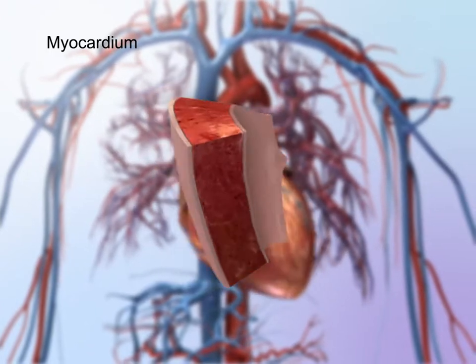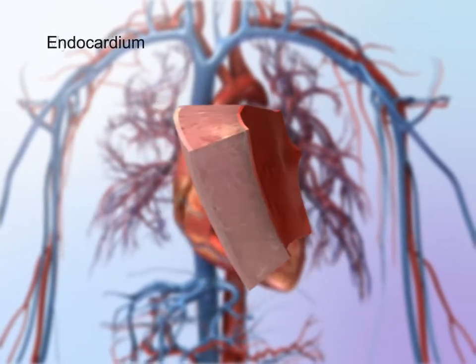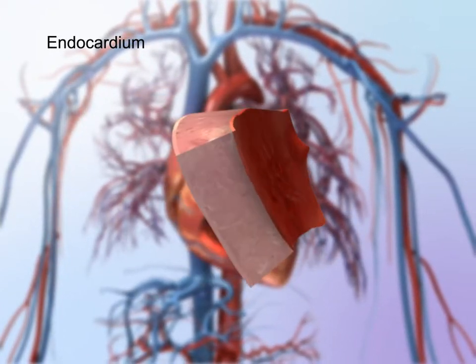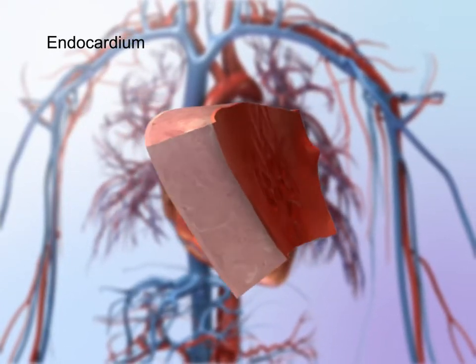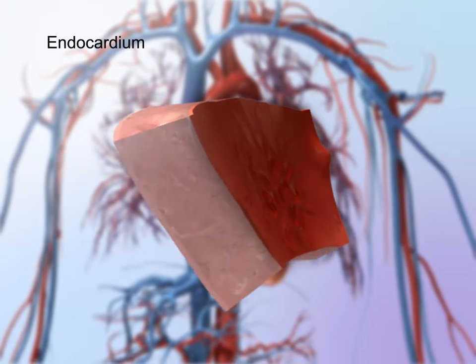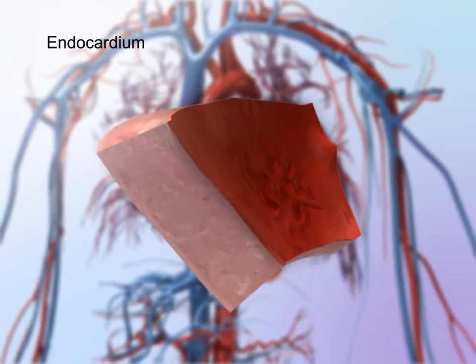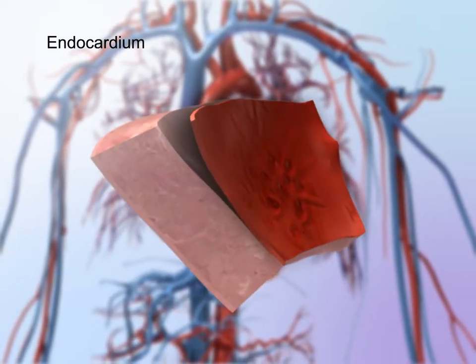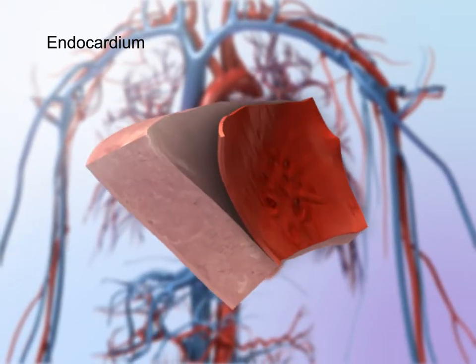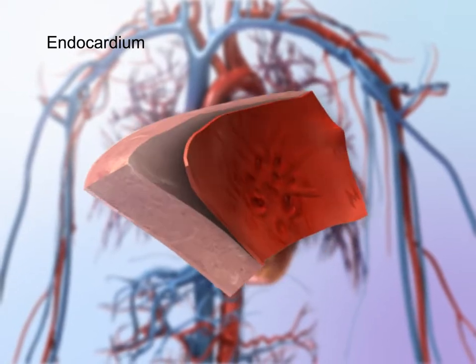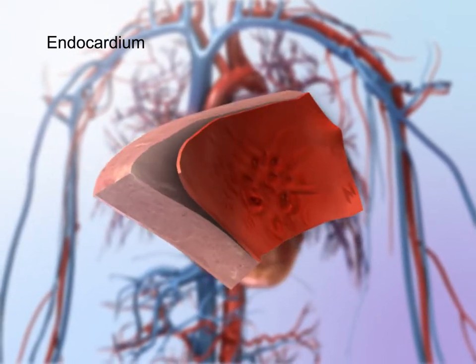Beneath the myocardium lies the endocardium, which forms the innermost layer of the heart wall. The endocardium lines the heart's internal structures and is continuous with the lining of blood vessels that attach to the heart.